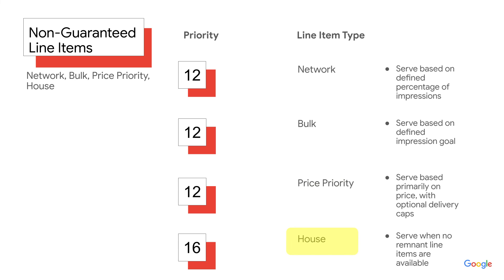Finally, we have house line items. These only serve when no remnant line items are available. This means that house line items will serve only after no network, bulk, price priority, ad exchange, or open bidding line items are available.